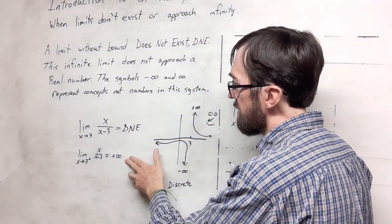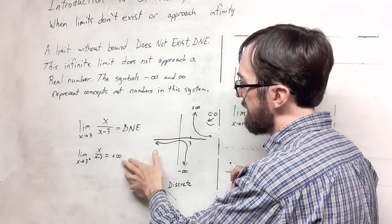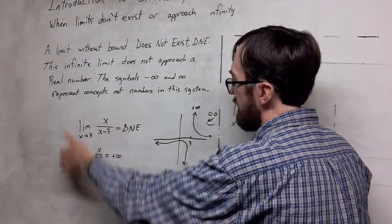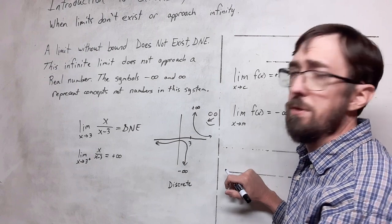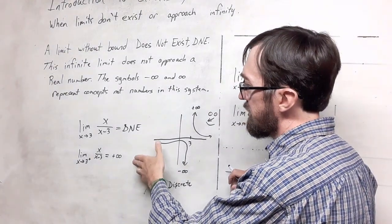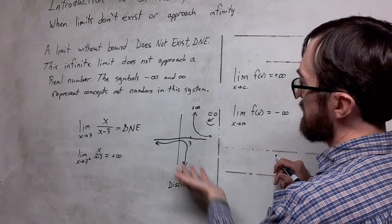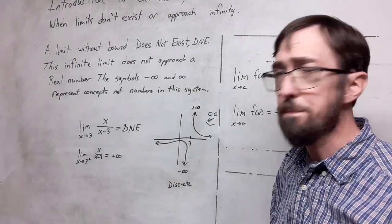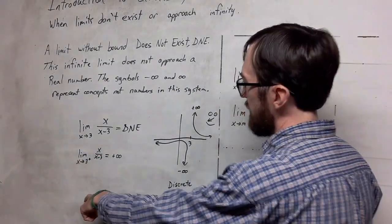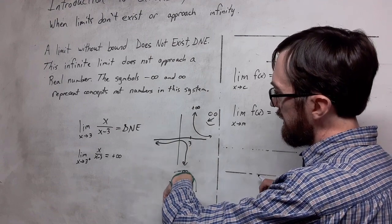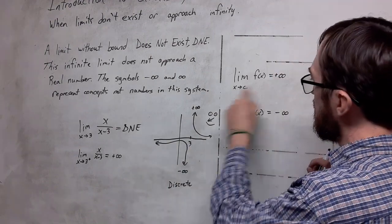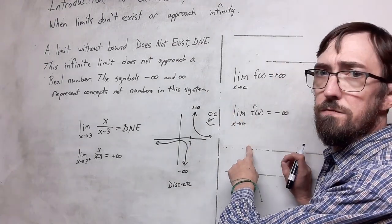So this gives me more information writing it this way rather than writing does not exist again here because it does not approach a real number, but we do know that it is going off to infinity. Again, if we do the left-hand limit, we could write negative infinity so it'll look more like this version here.